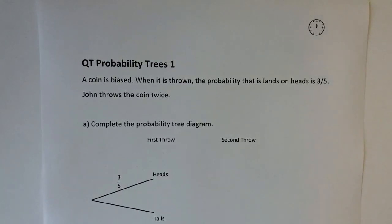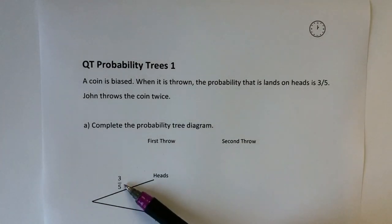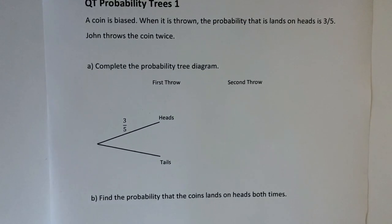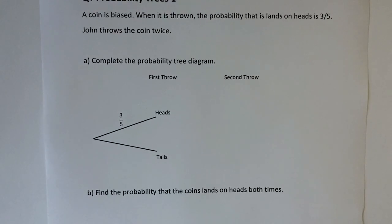Okay, so the first one says a coin is biased. When it's thrown, the probability it lands on heads is three out of five or three-fifths, so for every five throws this coin is going to land on heads three-fifths of the time. And then it says complete the probability tree diagram if John throws the coin twice.